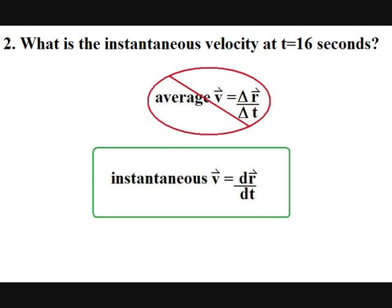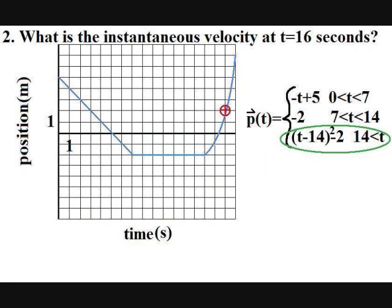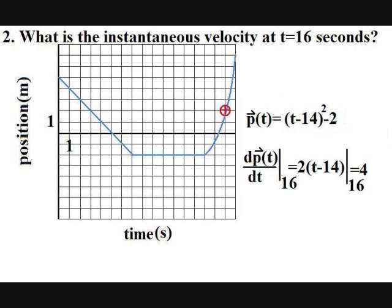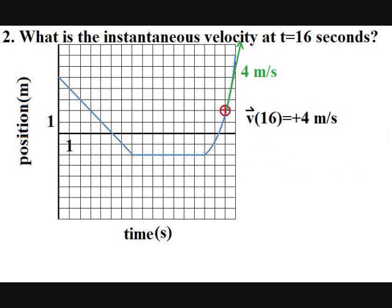So using the second equation, we need to find the derivative of position with respect to time and evaluate it at t equals 16 seconds. The relation of position as a function of time is a piecewise function. And at t equals 16 seconds, the equation for P of t is t minus 14 squared minus 2. The derivative with respect to time is 2 times the quantity t minus 14. Evaluated at t equals 16 gives 4 meters per second. Notice that this is a positive 4 meters per second, so that also reveals the direction, whatever we chose the positive direction to be.